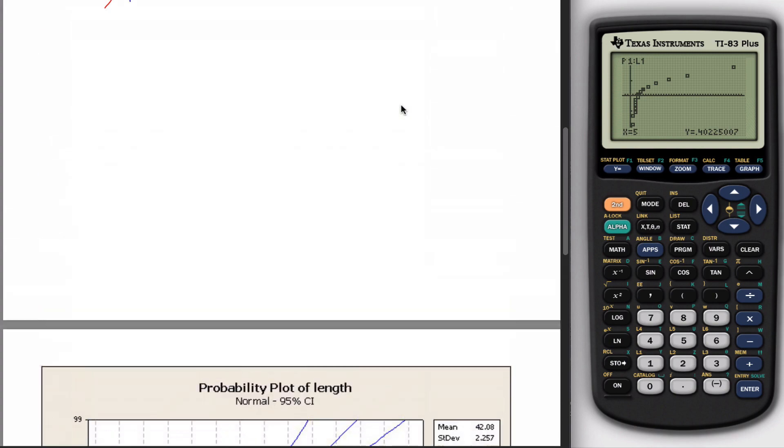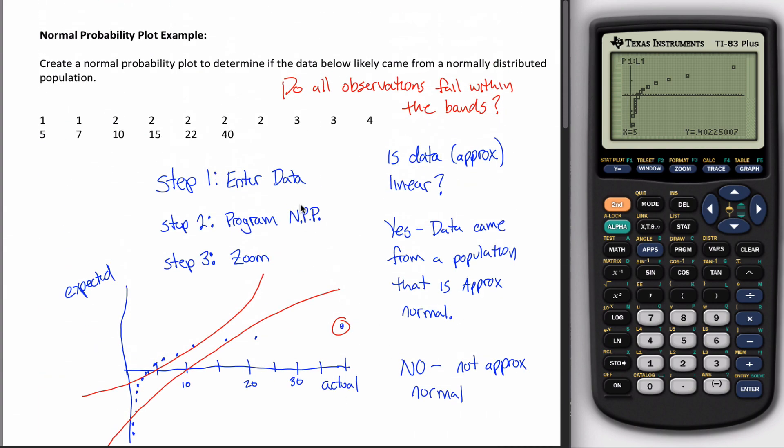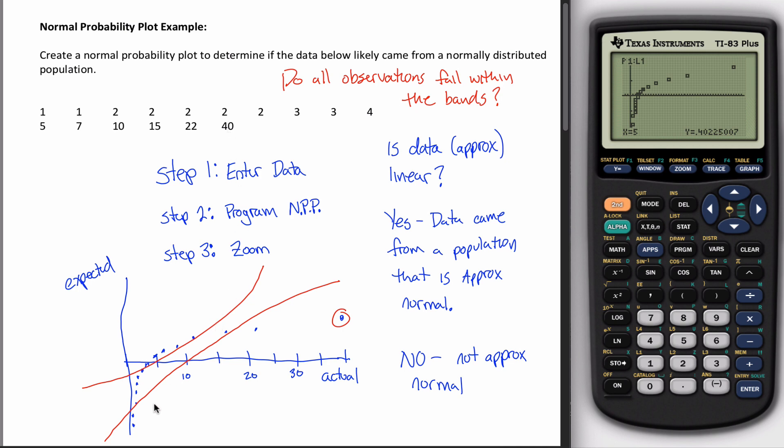So the big takeaways from normal probability plots is twofold. First off, I want you to be able to, if I give you data, draw this picture without the red bands in here. And I want you to be able to look at this picture without the red bands in here and ask yourself this question in blue. Is the data approximately linear? And I want you to know that if your answer is yes, then that tells you that the data came from a population that's approximately normal.